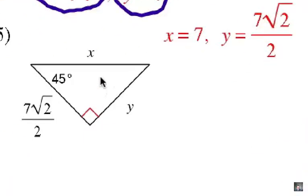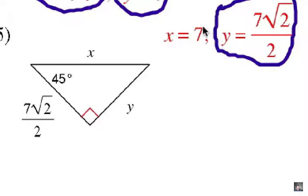Alright, number 5. You can see the answers here, and here's why. If the leg here is 7 radical 2 over 2, then the other leg Y has to be the same. That's pretty simple.